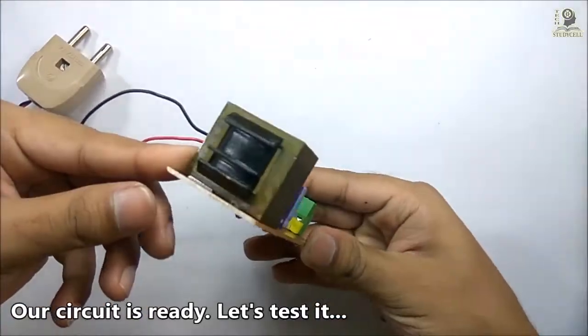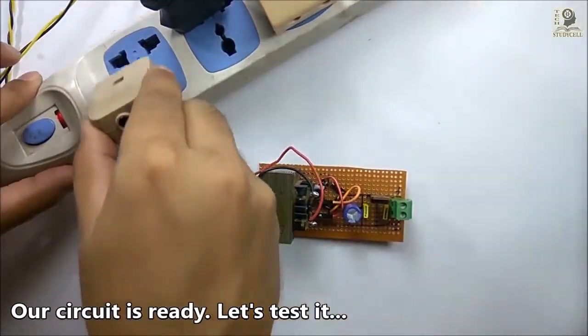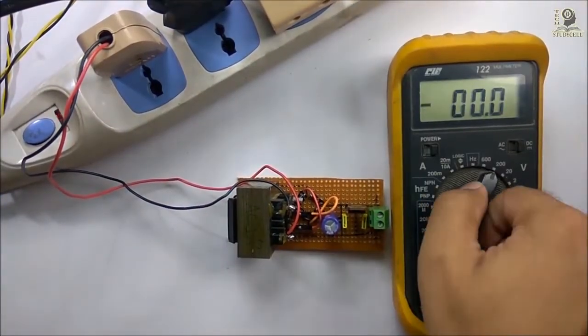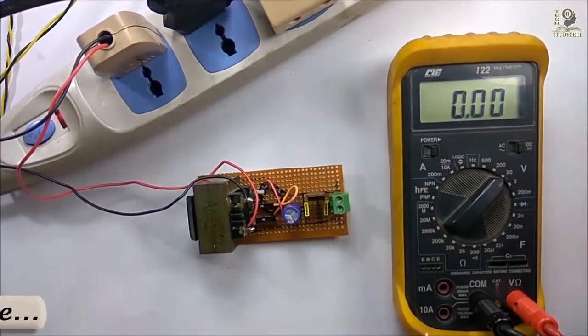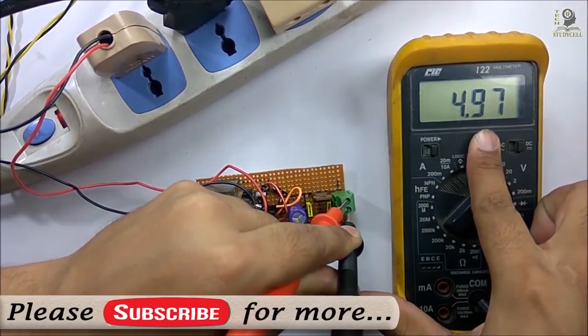Now the 5V DC supply is ready. We are going to test the circuit. Now I am connecting the circuit with the supply mains. Now you can see we are getting constant 5V DC at the output.